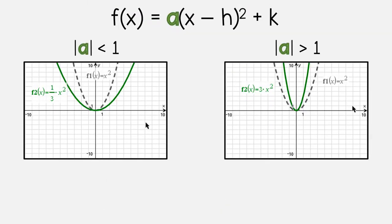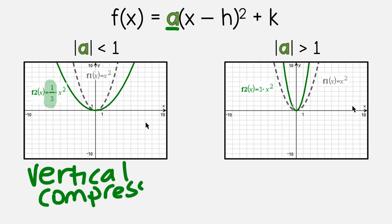So starting with a, if there is a number right in front of the parentheses. It depends on what type of number it is. If you look at this example on the left side, a is one third. So one third is smaller than one. And if you look at the picture, the green line is fatter or it's wider than the gray dotted line. So we call this a vertical compression, which means that your graph will look wider.